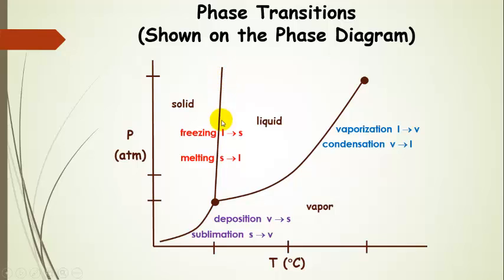Melting is the solid going to the liquid. And so this is sometimes called the melting line or the freezing line or the liquid-solid coexistence line on the phase diagram.